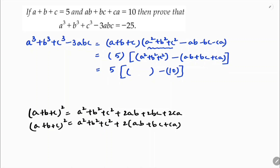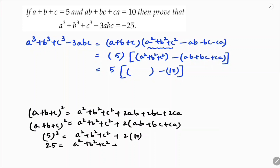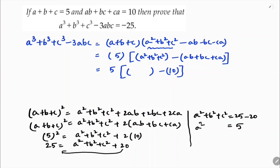Substituting the values: a plus b plus c is 5, so 5 square equals a square plus b square plus c square plus 2 times ab plus bc plus ca. Since ab plus bc plus ca equals 10, we get 25 equals a square plus b square plus c square plus 20. Transposing, a square plus b square plus c square equals 25 minus 20 which is 5.